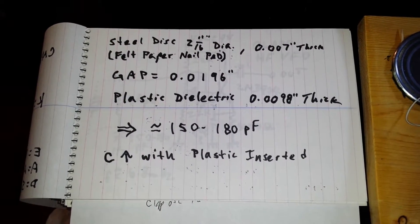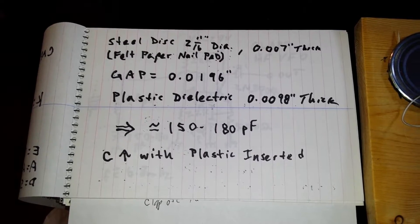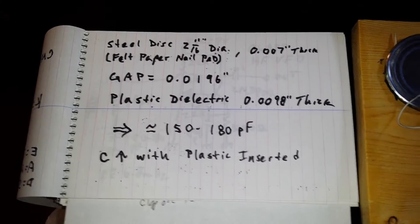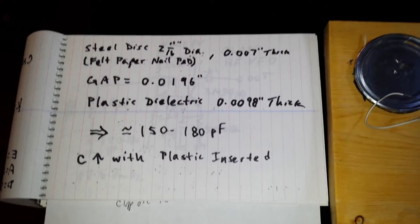The dielectric is 98 thousandths thick. This yields about 150 to 180 picofarads, increasing capacitance with the plastic inserted.